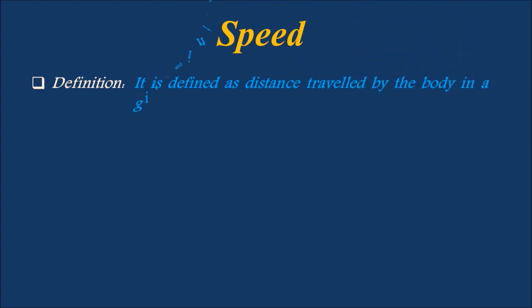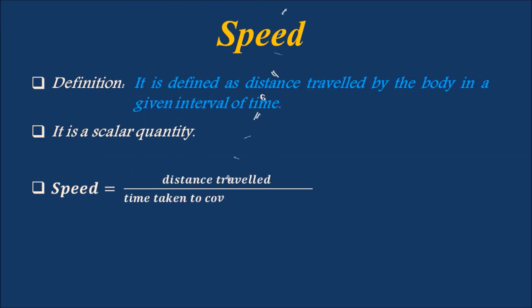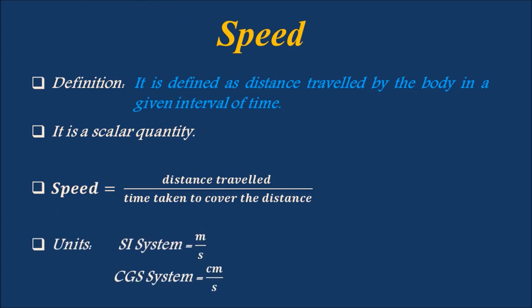Speed is defined as the distance traveled by the body in a given interval of time. Speed is a scalar quantity as it is represented with only magnitude. Speed is expressed as distance traveled divided by time taken to cover the distance. Speed is expressed in the SI system as meters per second, and in the CGS system as centimeters per second.